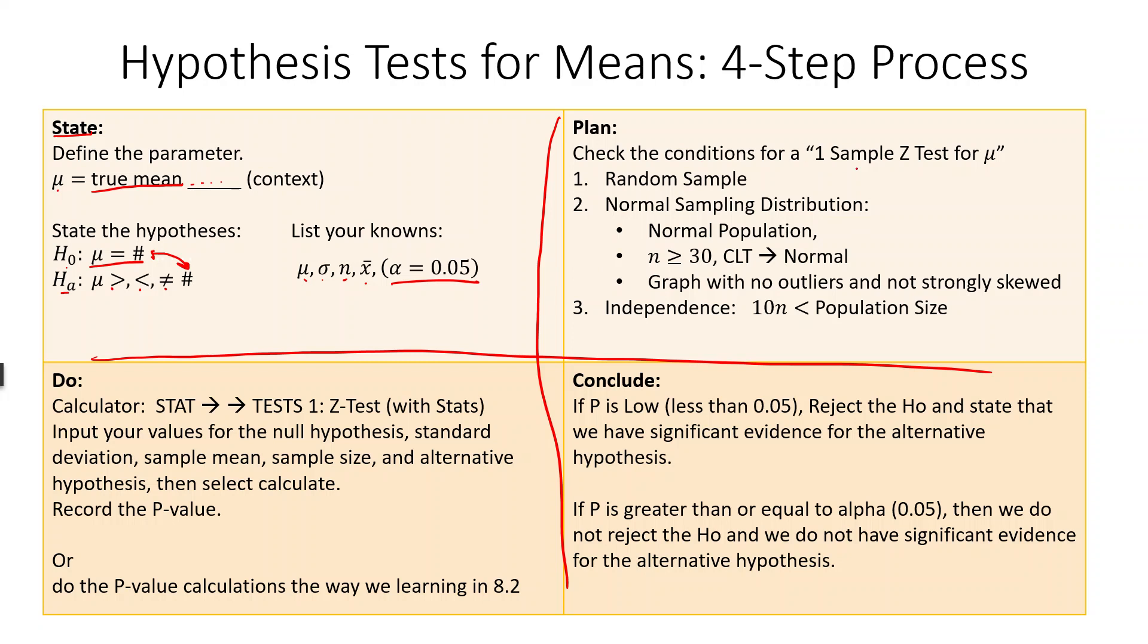Then over in the plan, we're actually going to do our test. The test that we're doing here is called a one-sample Z test for mean. We're going to have to have a random sample, just like before. We're going to have to have a normal sampling distribution. We can get that from having a normal population, from having a sample size greater than or equal to 30, or we can do a graph and look for no outliers or strongly skewed. For this class, we're pretty much going to stick with just our sample size is greater than 30. As long as you say our sample size is greater than 30, then the central limit theorem will kick in and tell us that we have a normal distribution.